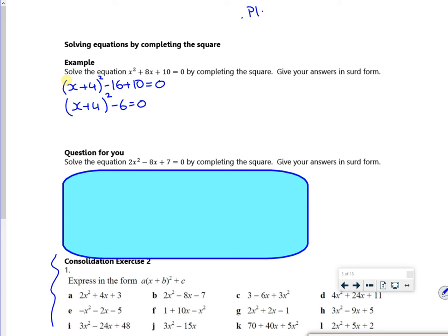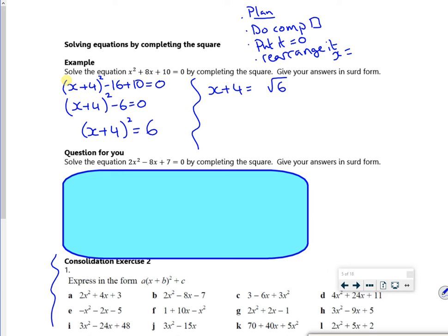So I'm going to do completing the square, put it equal to zero and then rearrange it and get x equals. I'm going to take the 6 over. Then I'm going to get rid of the square by square rooting it. Don't forget there's a plus or minus. Then I'm going to take the 4 over there. And that's it, that's my answer in surd form.